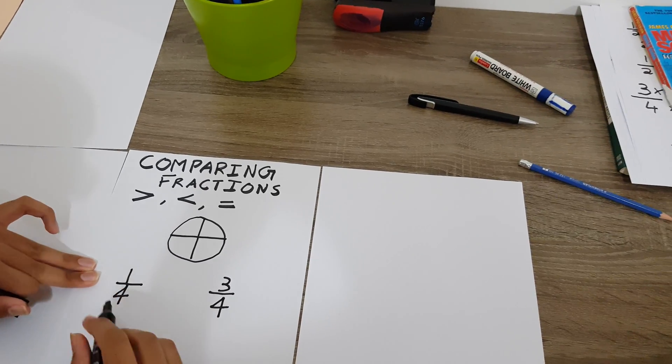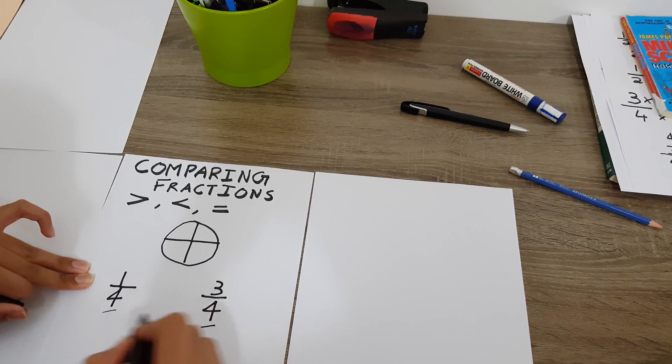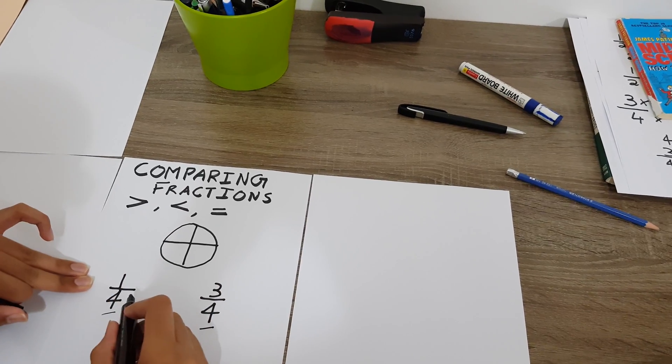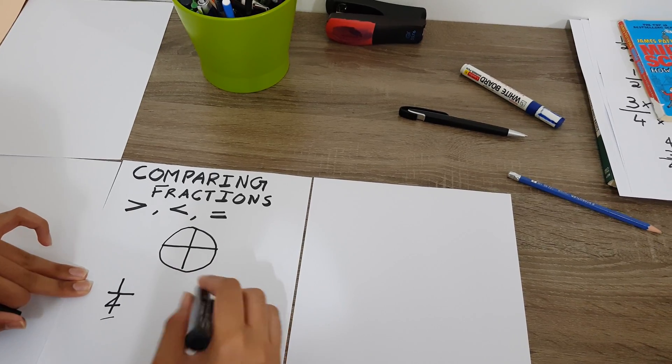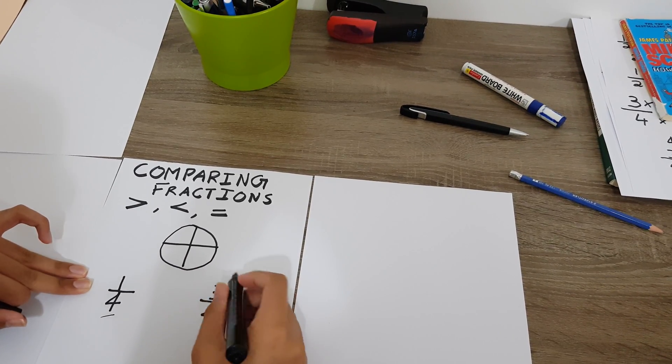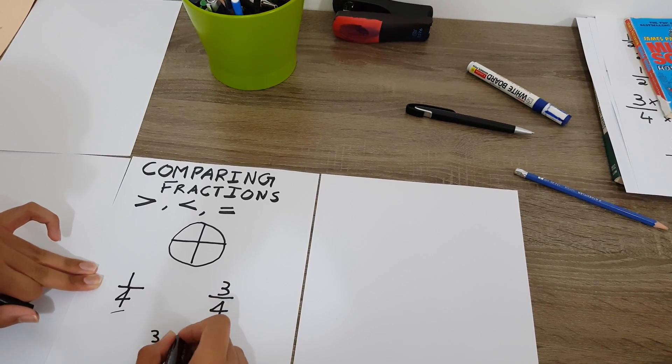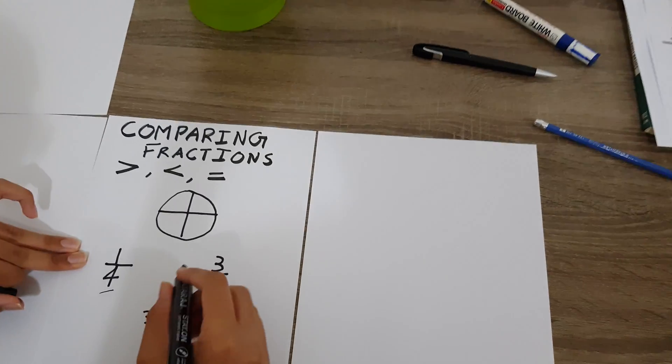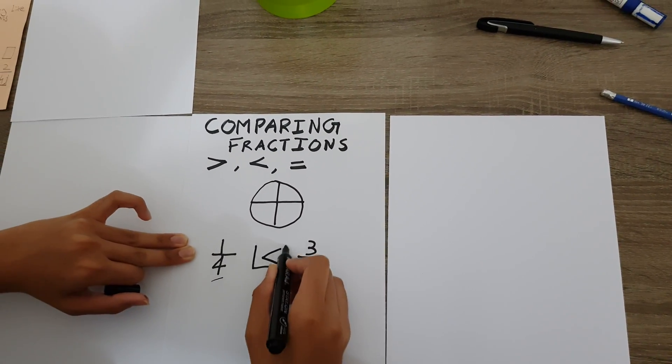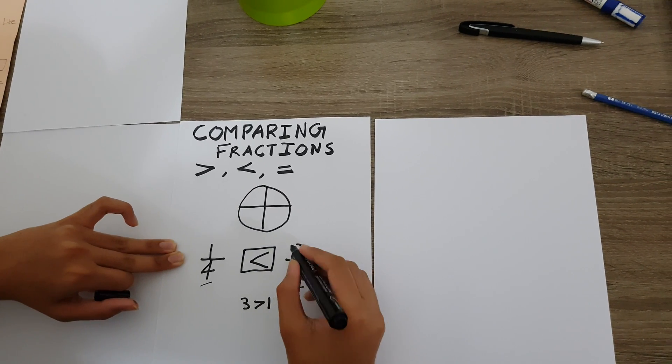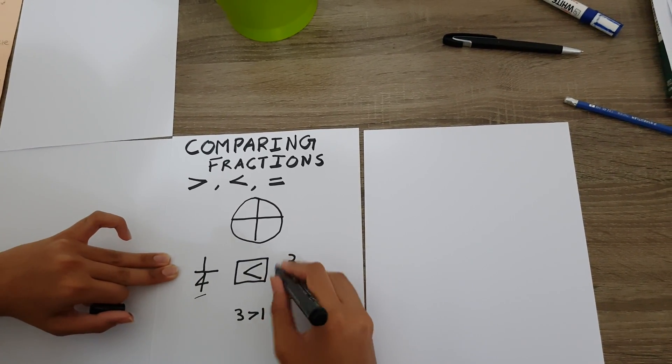First of all we look at the denominator. If the denominators are the same, in this case it is, we then look at the numerator. If the numerator of a fraction is bigger than the other, that fraction is greater. So here, three over four—three is greater than one. Yes. So definitely this fraction is going to be greater than one over four. That means you ate more of the pizza than your friend because the fraction was greater.